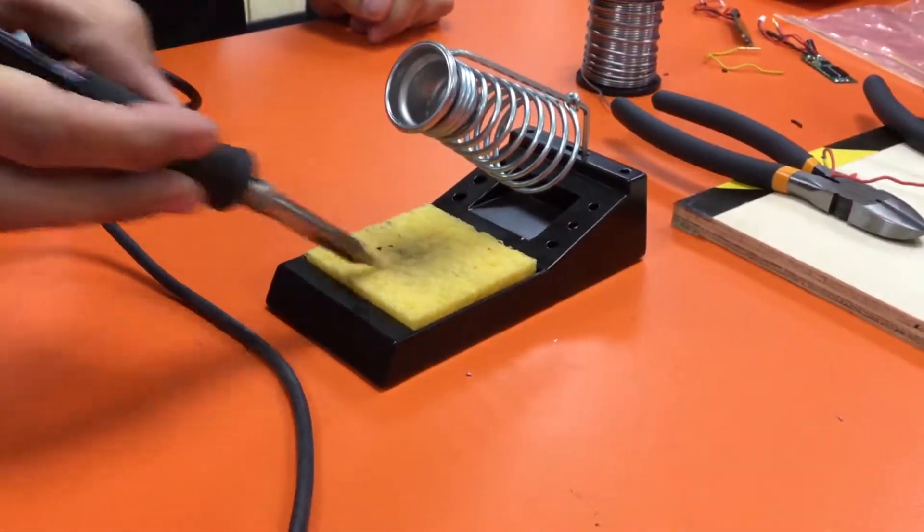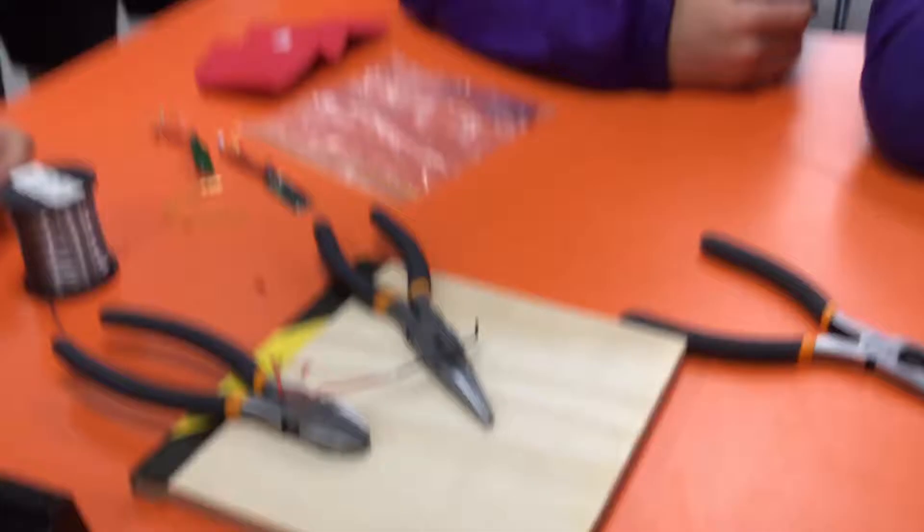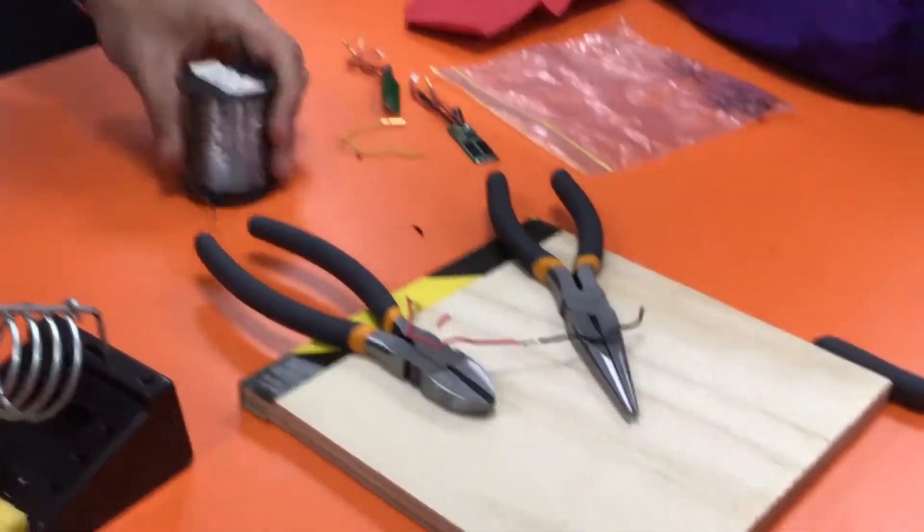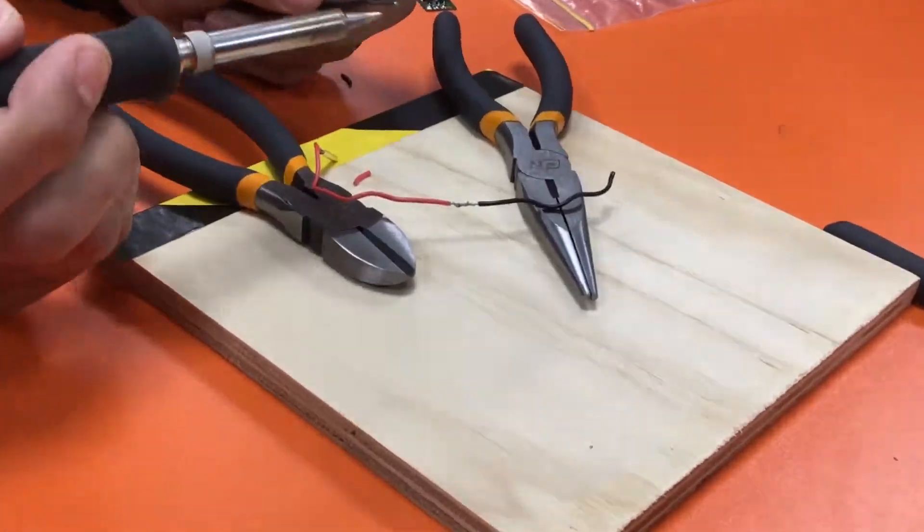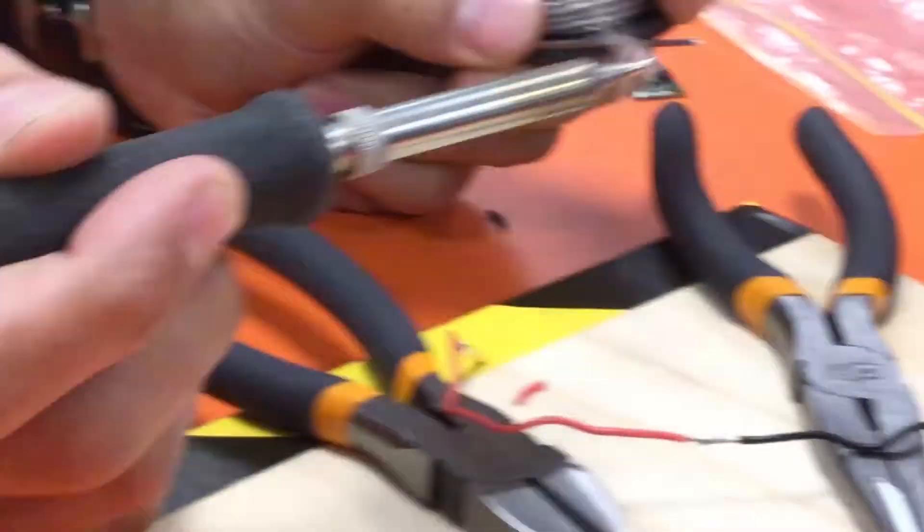So, clean the tip. It should be really shiny. Then, basically the soldering iron will melt the solder and it slowly builds up. That's the resin.